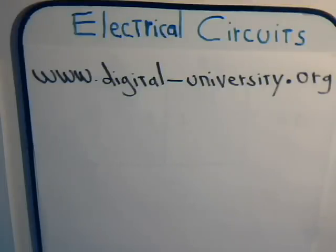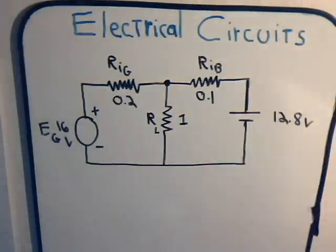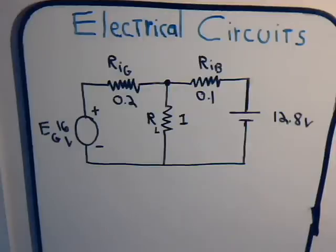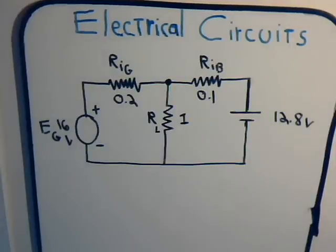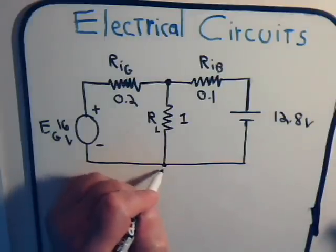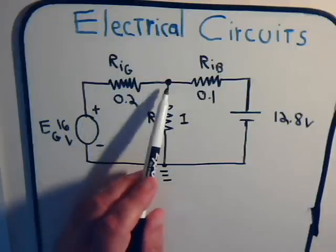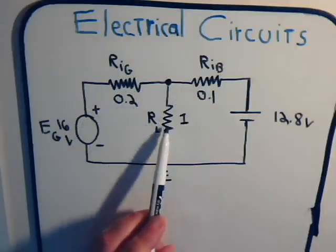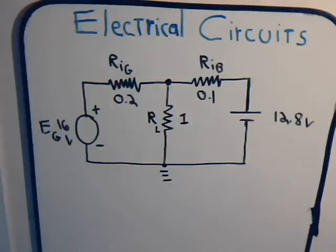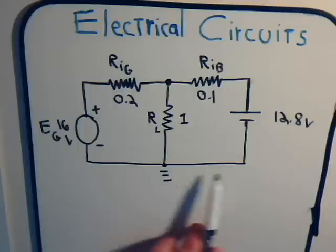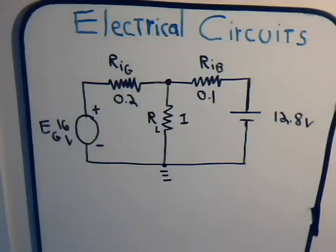This is video number 25 from digital-university.org. In this video we're going to consider the node technique again. The circuit we have has, like the previous video, a single node for us to consider. Actually there are two nodes — one here and one down here — but this one is grounded. A node is just a junction point of one or more branches of the circuit.